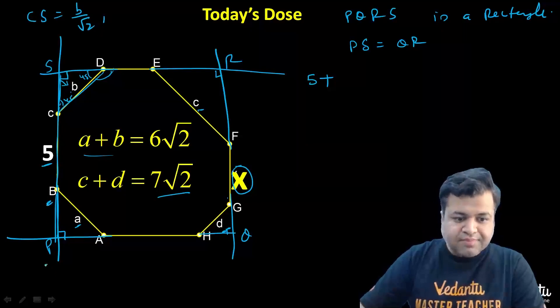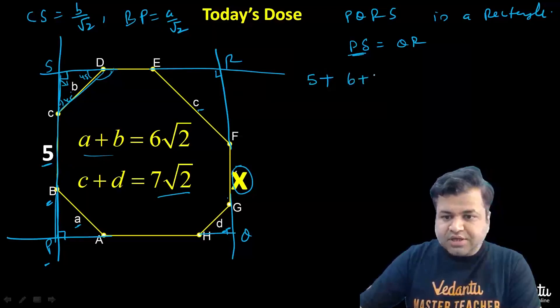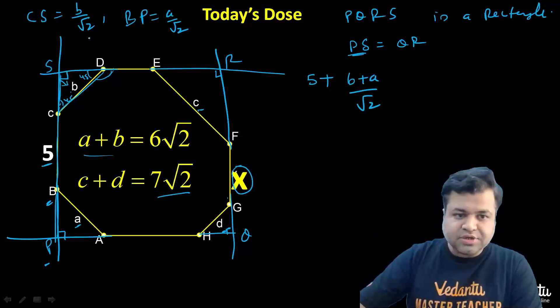So this PS will be PC which is 5 plus B plus A upon root 2 of these two.